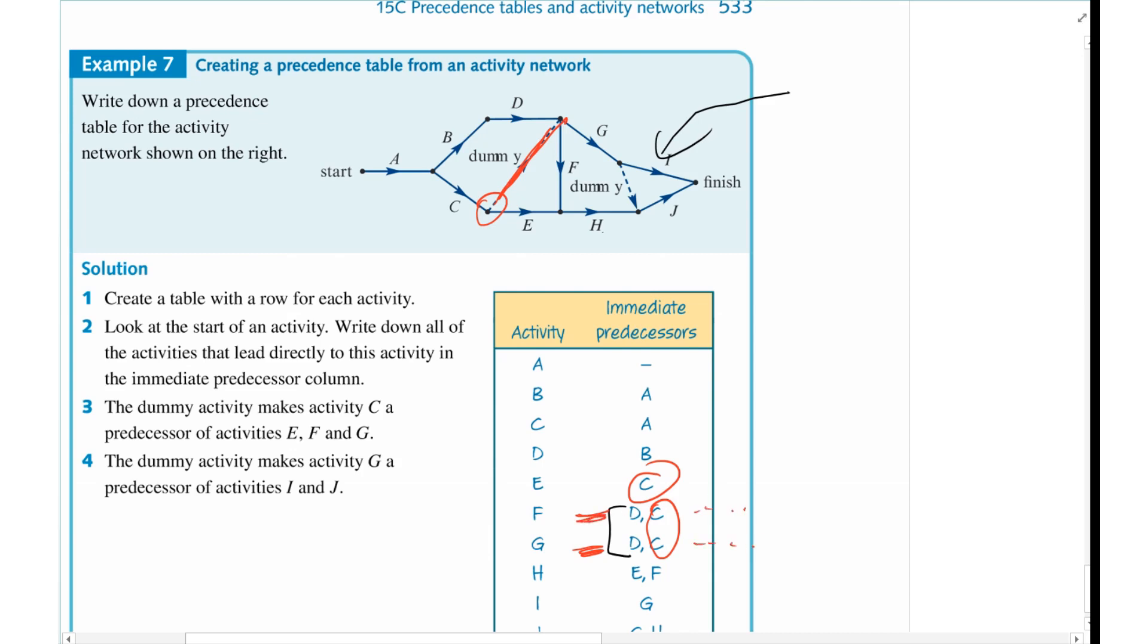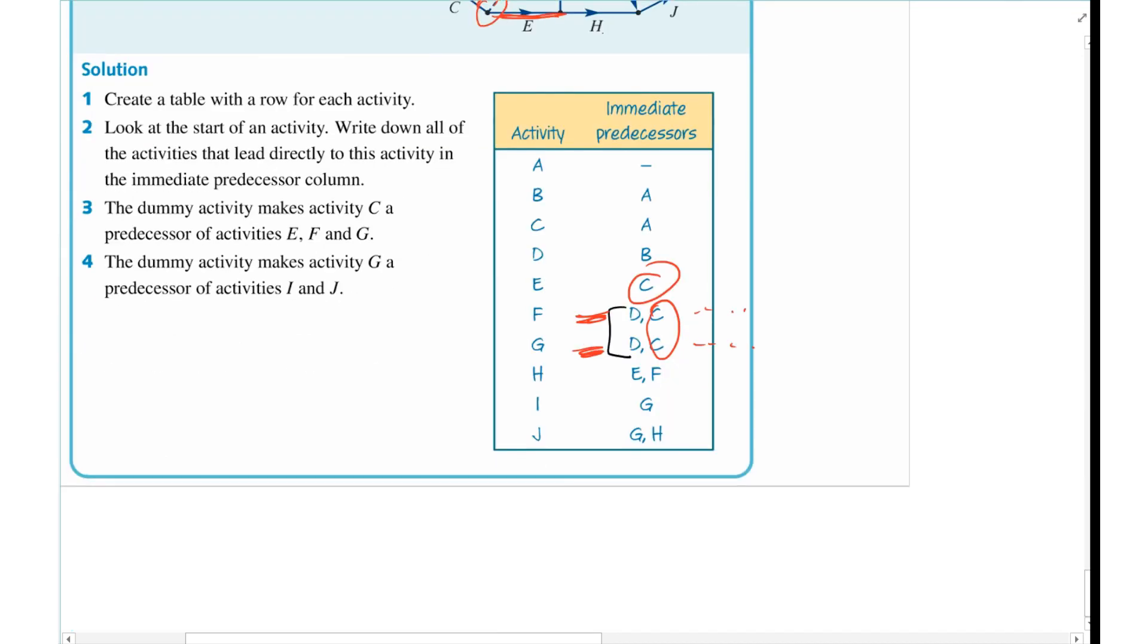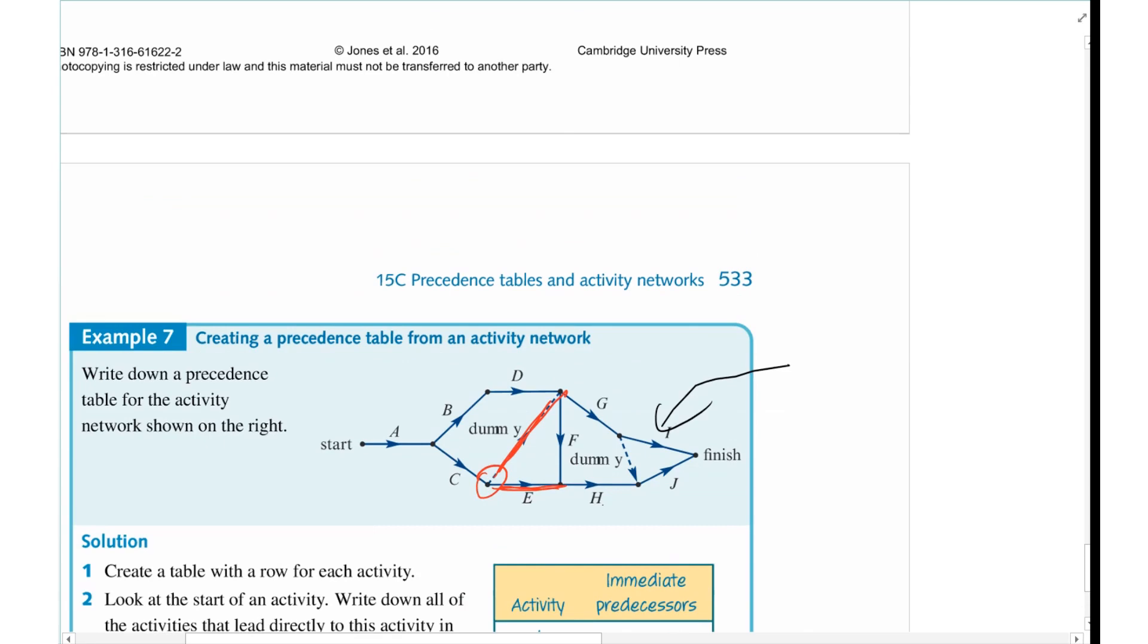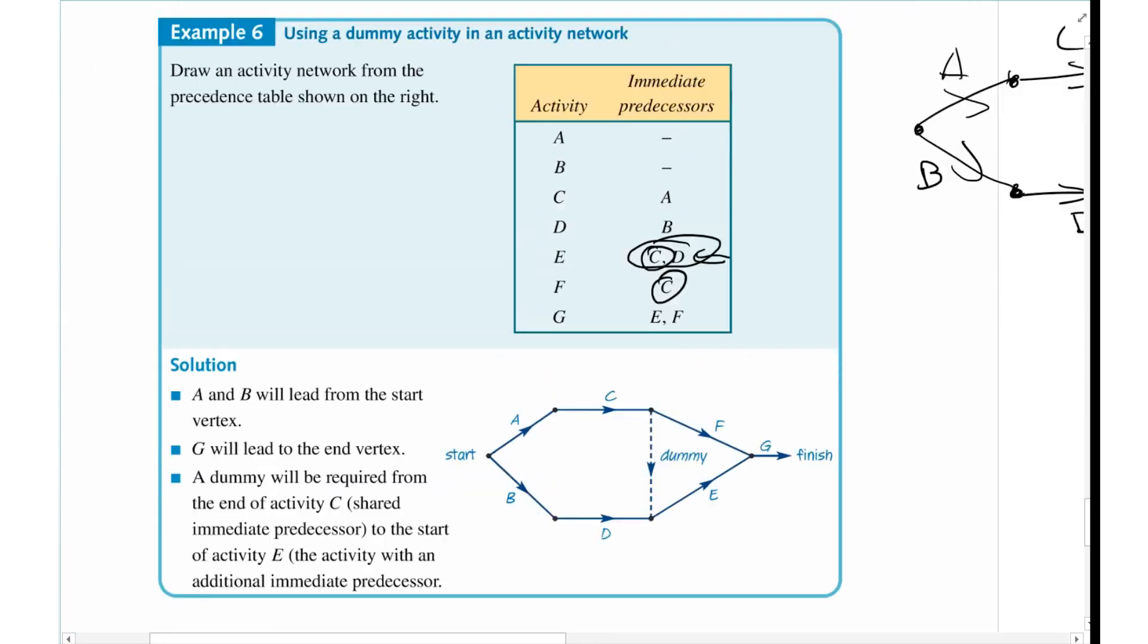And the C by itself, where E comes off it, that's where it has a solid line. That's the process of going through dummy activities.